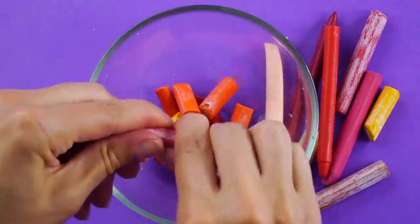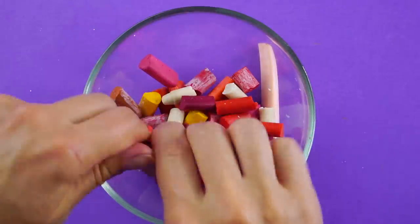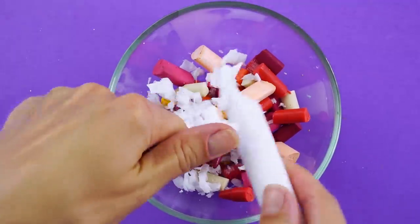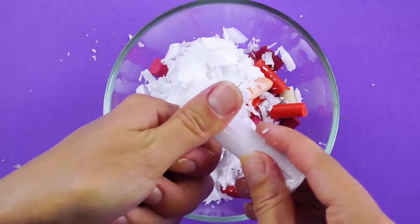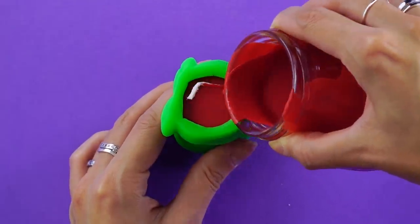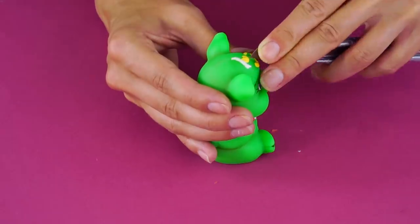Now for the wax. Break up some crayons into a bowl. Cut up some wax from a plain candle and add it to the mixture. Melt it all down and pour the hot wax mixture into your mold. Let the mixture cool and harden. Then carefully cut the mold away with an X-Acto knife.